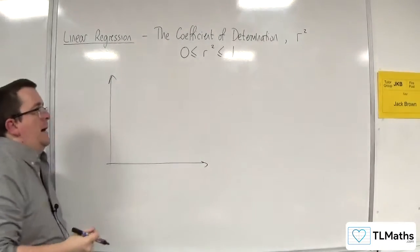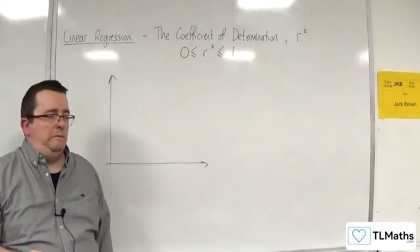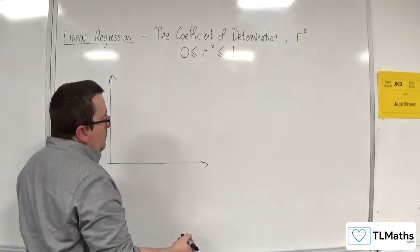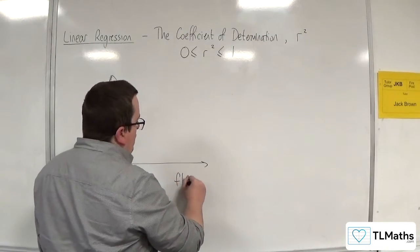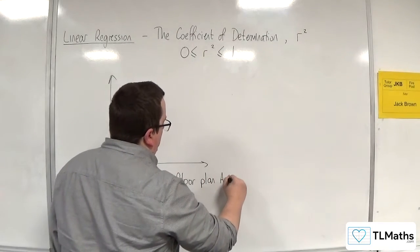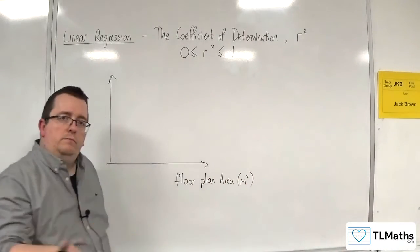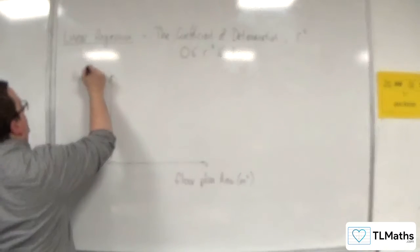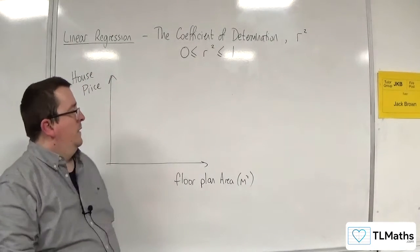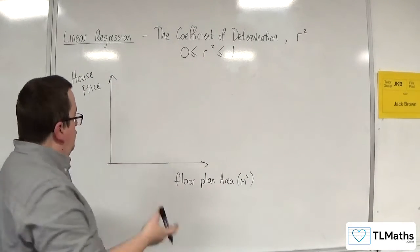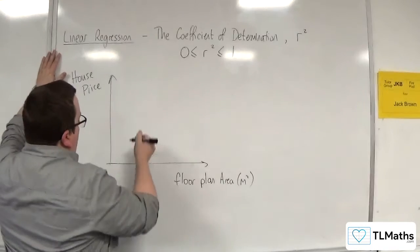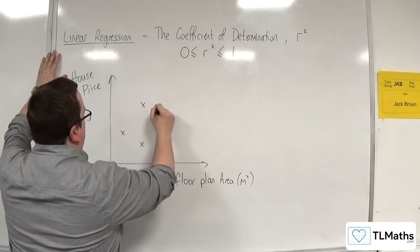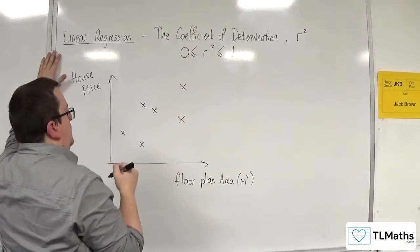Let's say we have a number of houses, and we're going to compare them by their floor plan area in metres squared against their price, the price that they were sold at. Let's say we had some data on that. We collect that data and maybe it looks something like this.